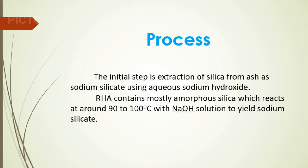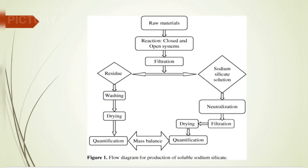The initial step in processing is extraction of silica from ash as sodium silicate using aqueous sodium hydroxide. Rice husk ash contains mostly amorphous silica, which reacts at around 90–100 degrees Celsius with NaOH solution to yield sodium silicate. After sodium silicate is obtained, it is mixed with baking soda, grated soap bar, and borax in the proportion of 2:2:2:3 in a container.